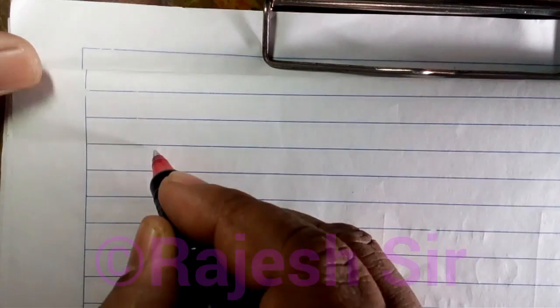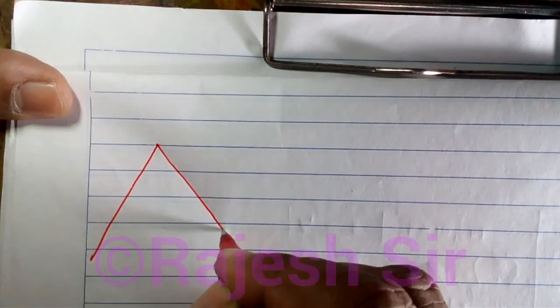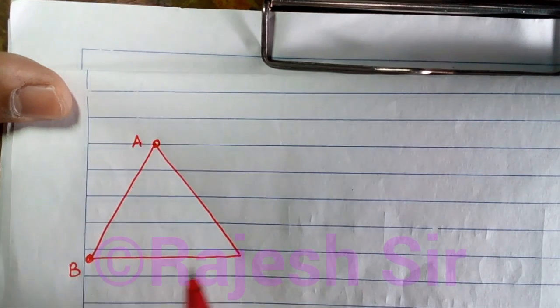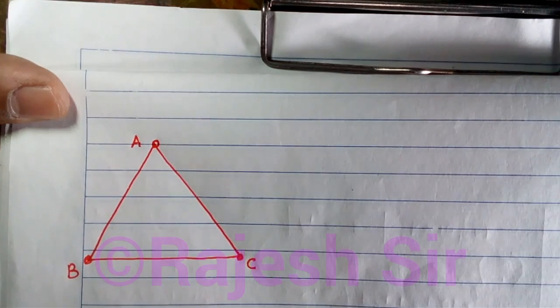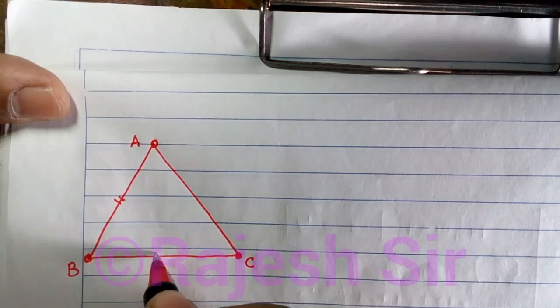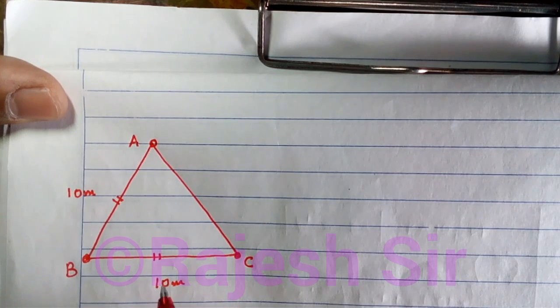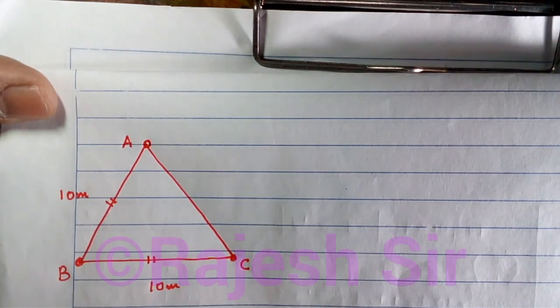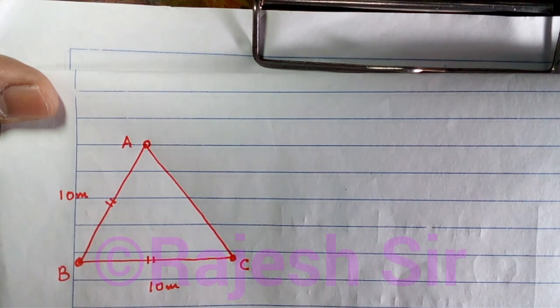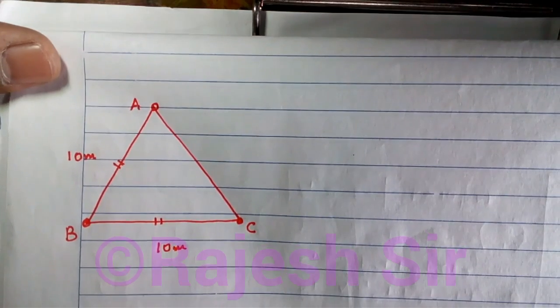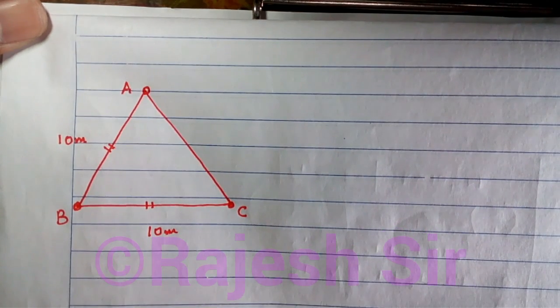In this problem we have an equilateral triangle ABC. Each side is 10 meters. It carries charges of plus 100 microcoulombs, minus 100 microcoulombs, and 75 microcoulombs placed at B, C, and D respectively, where D is the midpoint of BC.